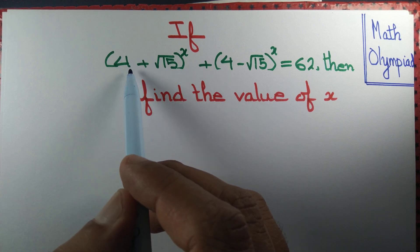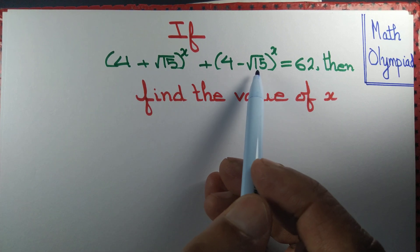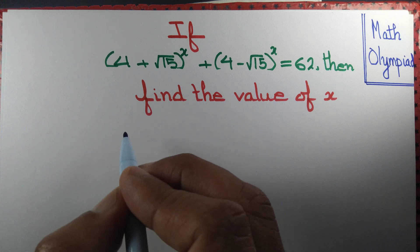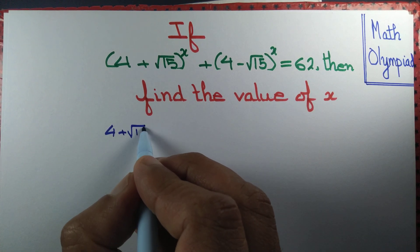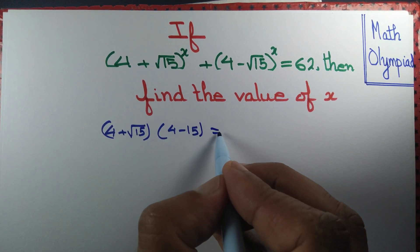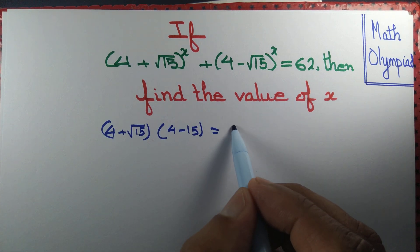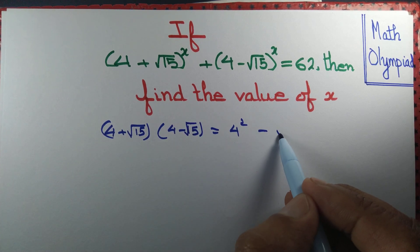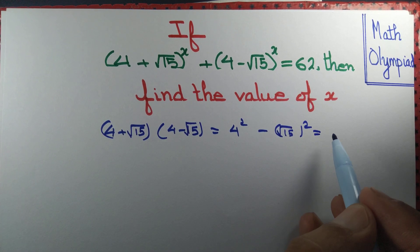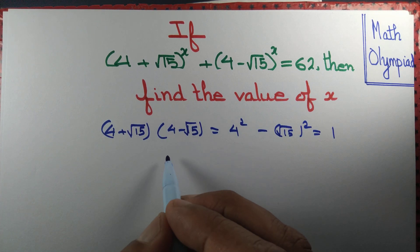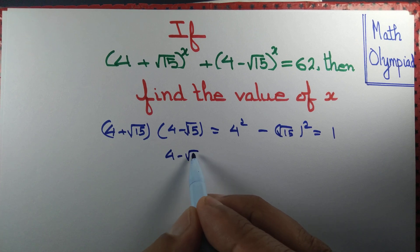Observe that (4 + √15) + (4 - √15): the √15 will get cancelled and you will get 8, but that may not help us further. We observe that (4 + √15)(4 - √15) — using a+b times a−b equals a² − b² — gives 4² − (√15)² = 16 − 15 = 1.